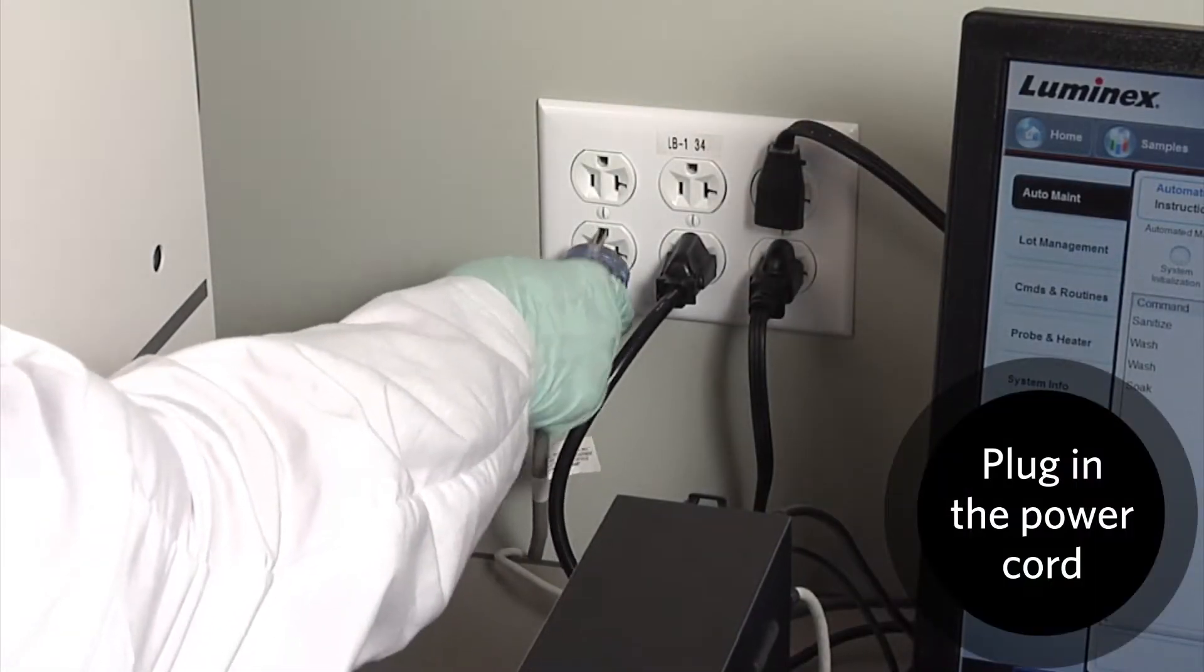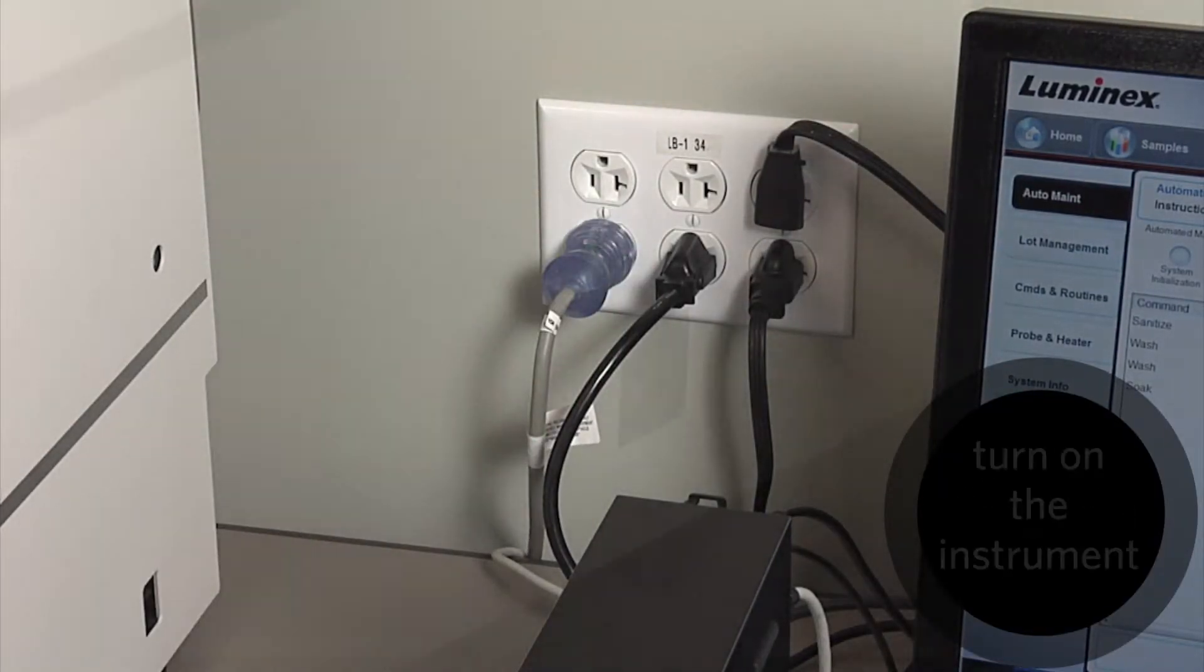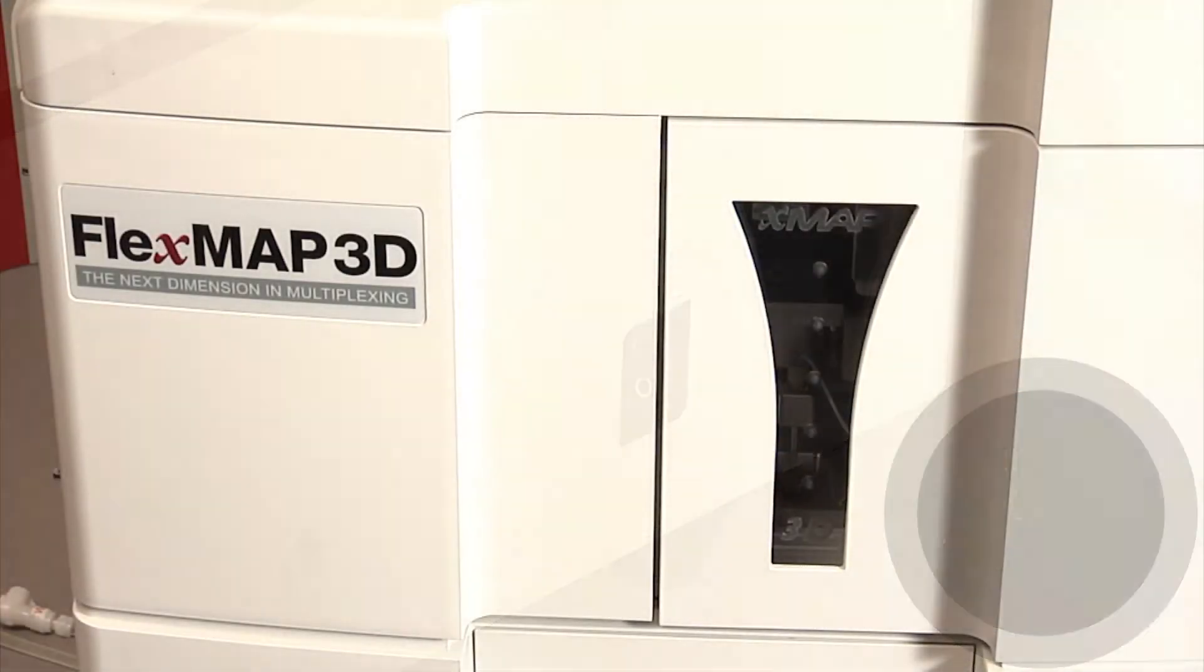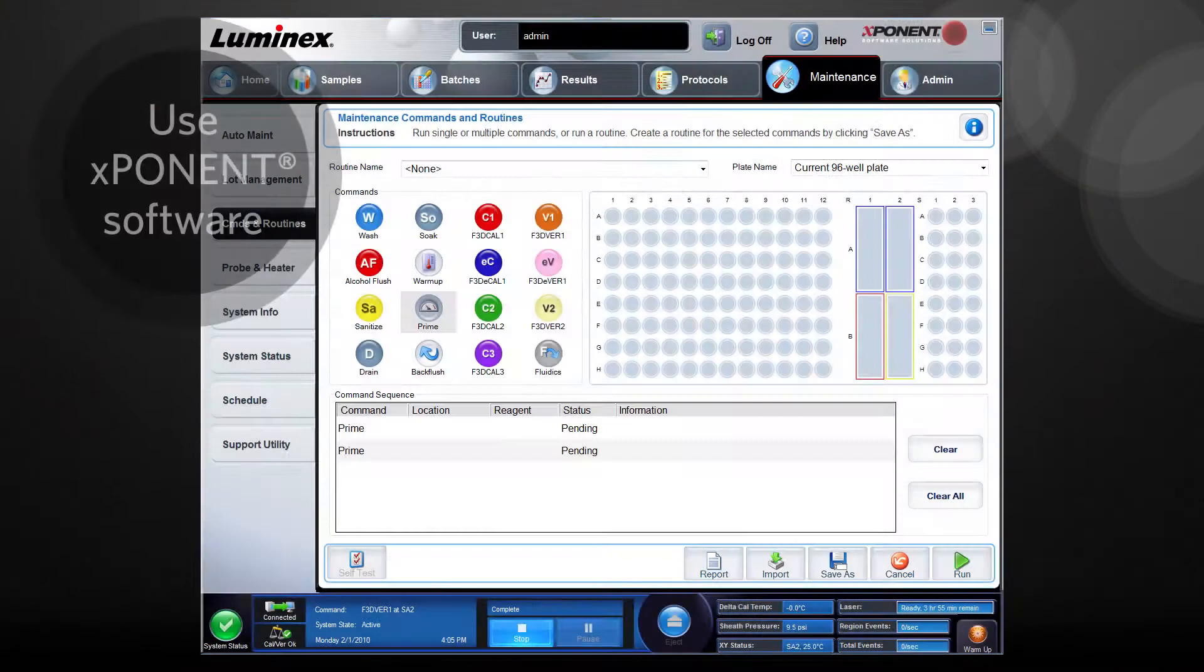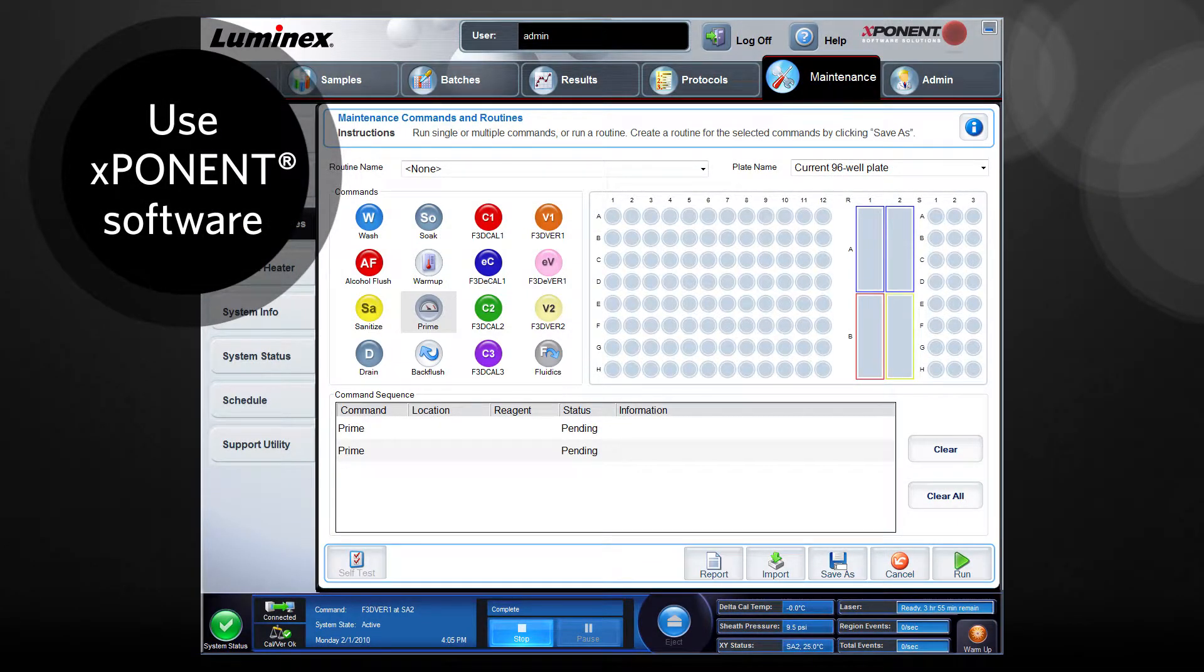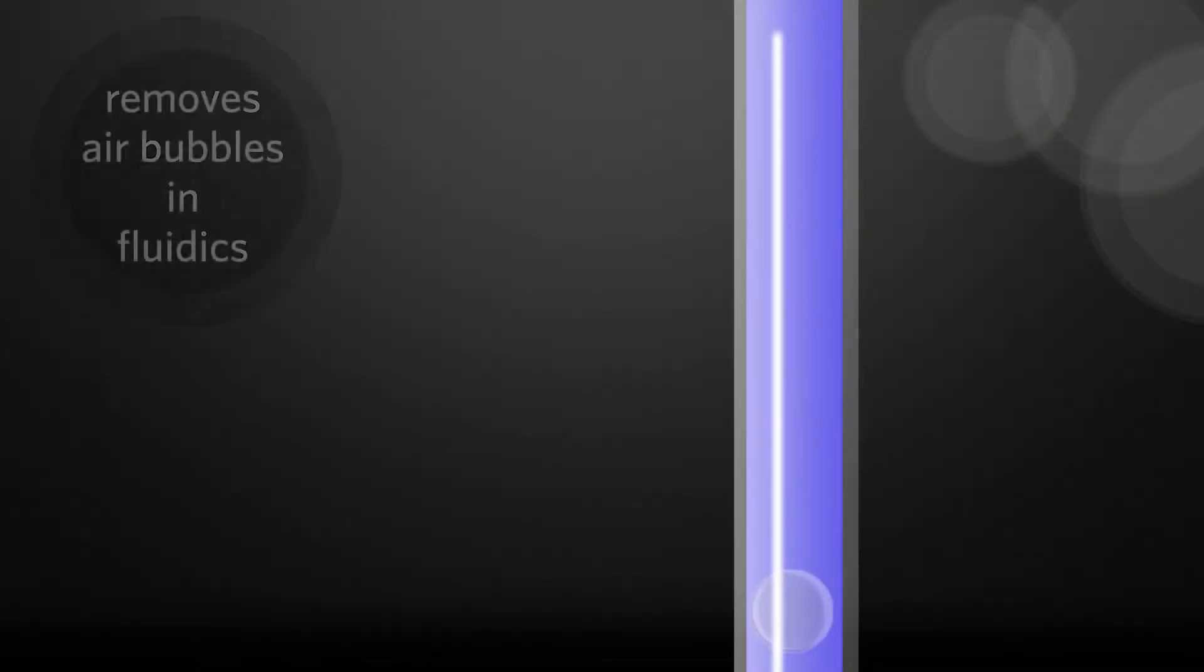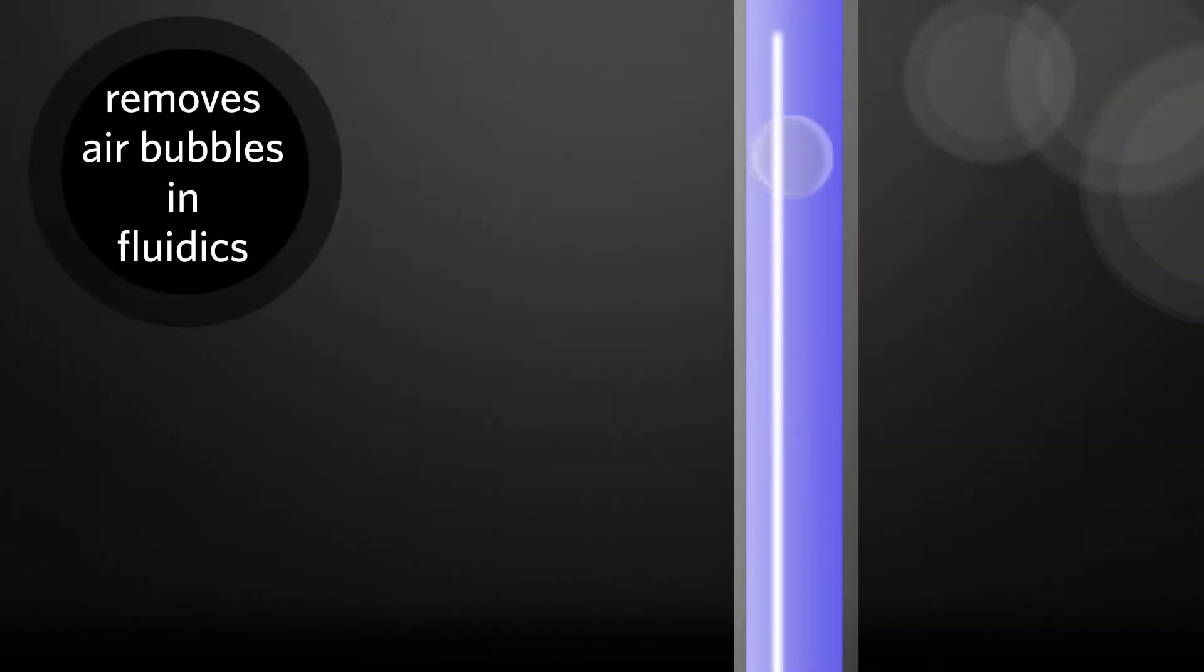Plug in the power cord and turn on the FlexMap 3D instrument. Using the Exponent for FlexMap 3D software, run the prime command twice. This will remove any air bubbles in the fluidics lines.